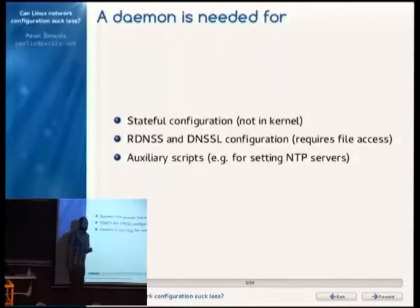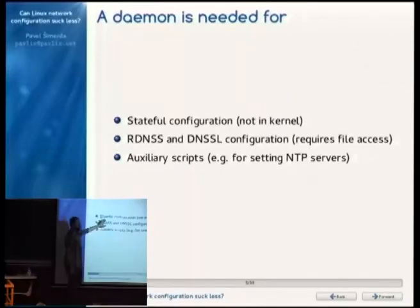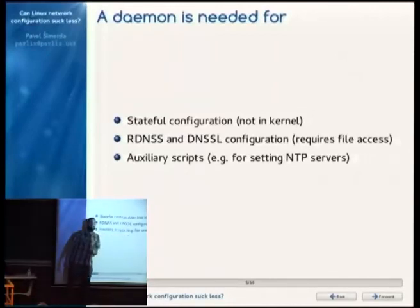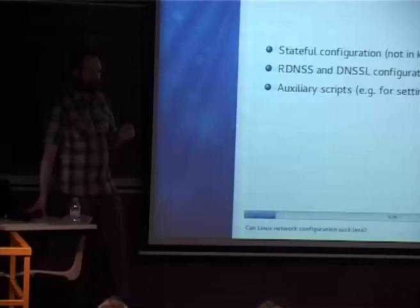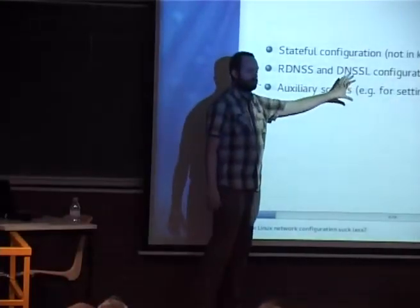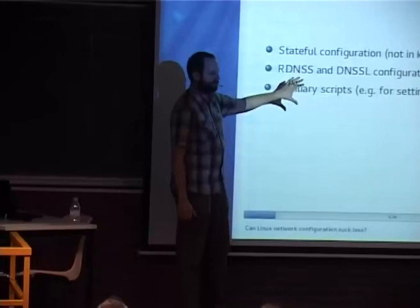Currently in Linux, DNS configuration is not stored in memory but in /etc/resolv.conf, so you need some daemon that listens to the kernel and sets up this information. You also need a source of auxiliary scripts — for example, when you receive a list of NTP servers over DHCP, you want to run a script to tell the NTP client daemon to use exactly those servers.